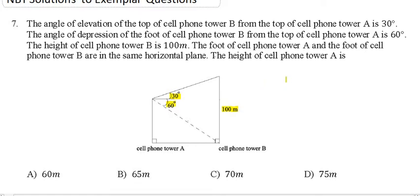The foot of cell phone tower A and the foot of cell phone tower B are on the same horizontal plane. The height of cell phone tower A is, and that's what we need to find out, the height of cell phone tower A.